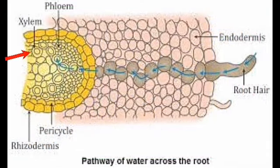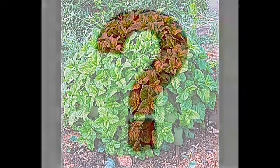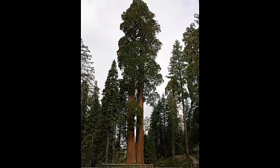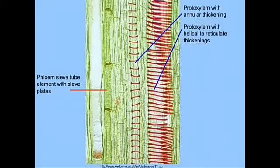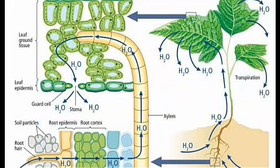This root pressure can lift the water in herbs and small plants only. Then how is water moved to great heights, as in the case of tall trees like the giant sequoia? This needs a different mechanism. The xylem vessels are tubular structures that are interconnected between the xylem of the root, stem and leaves. This creates a continuous column of water that has to be pulled up.